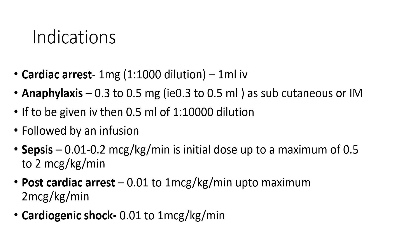In septic shock, Adrenaline is given as an IV infusion, typically as a second-line vasopressor if the patient persists with hypotension on other agents like noradrenaline. The dose is 0.01 to 0.2 microgram per kg per minute, titrated up to a maximum of 0.5 to 2 microgram per kg per minute. In post-cardiac arrest care, infusion is started at 0.01 to 1 microgram per kg per minute, up to a maximum of 2 microgram per kg per minute.